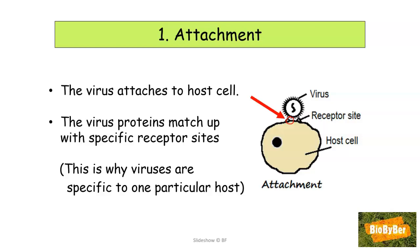Viruses can't attach to any cell they like — the cell has to have the correct proteins on its surface. This is why viruses are specific to one particular host. Even within your body, a virus might only be able to attach to certain types of cells. For example, the flu virus is only able to infect or attach to your nose cells and your throat cells.